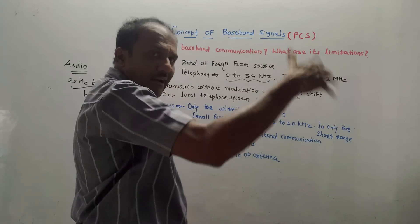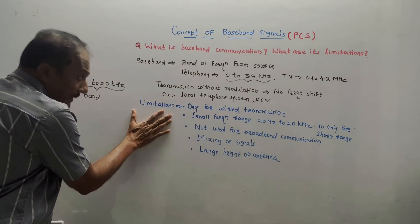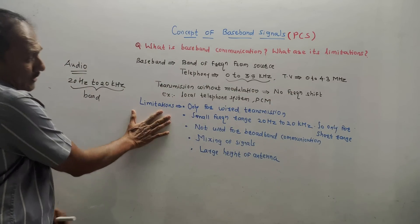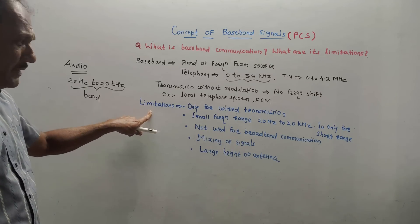Examples of baseband communication are local telephone systems (landline) and PCM — Pulse Code Modulation — which we will study in later units.